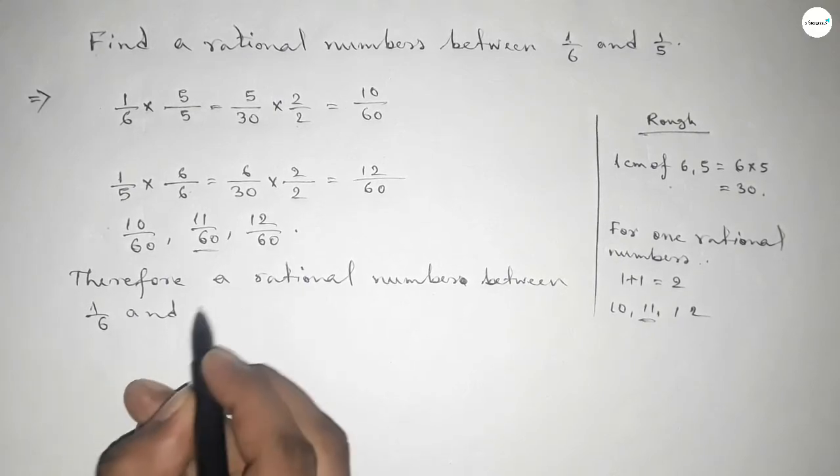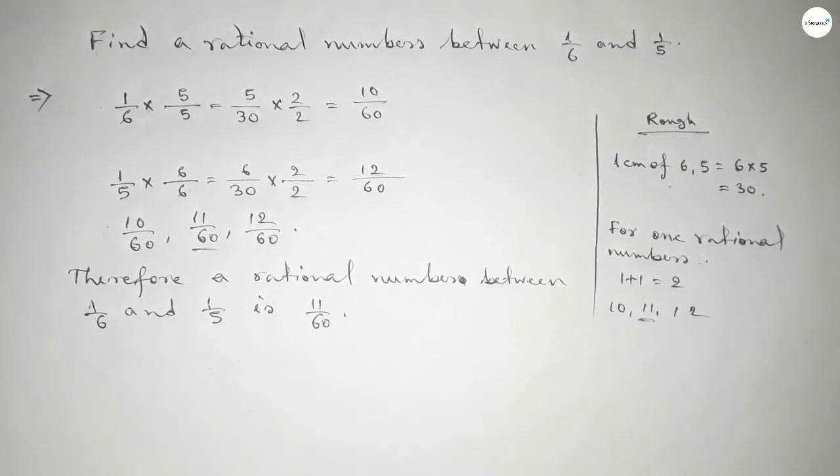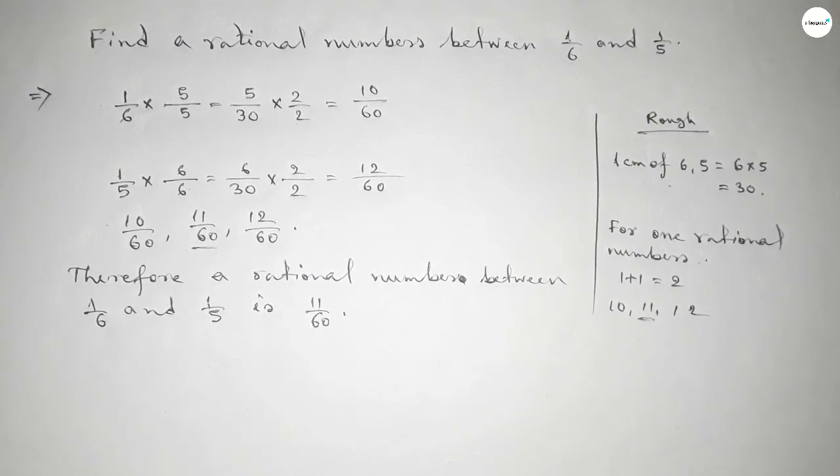11/60. So this is the process to find a rational number between 1/6 and 1/5. That's all.